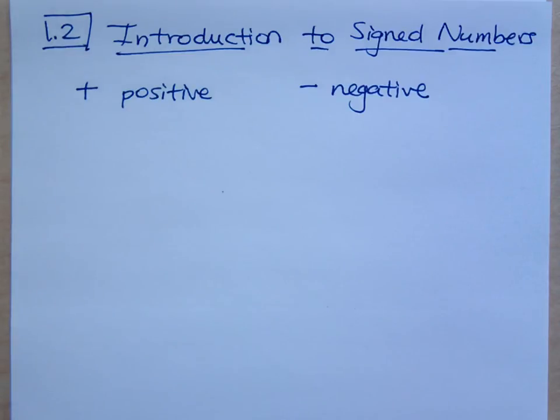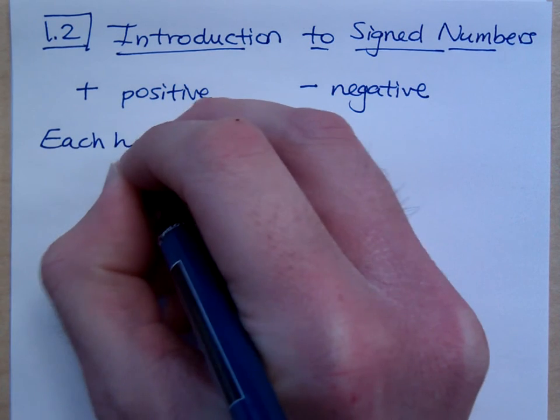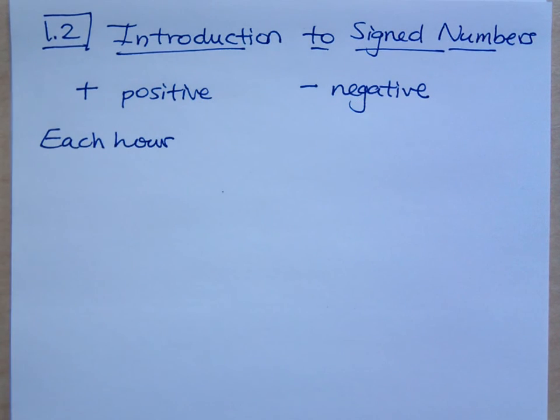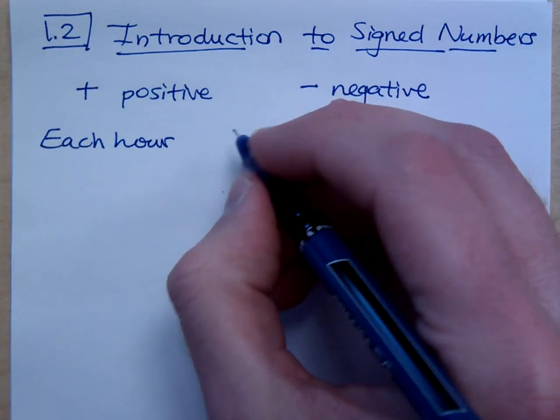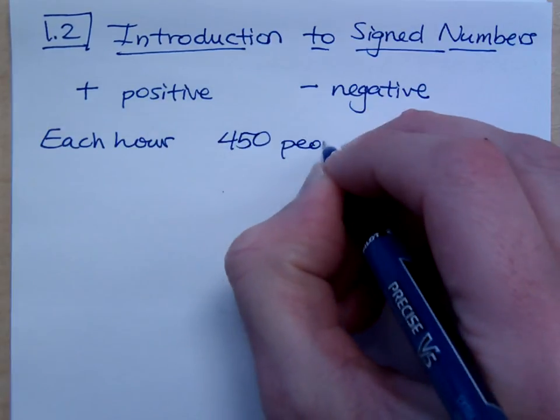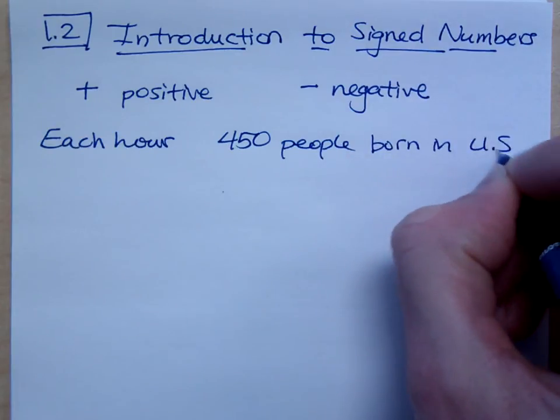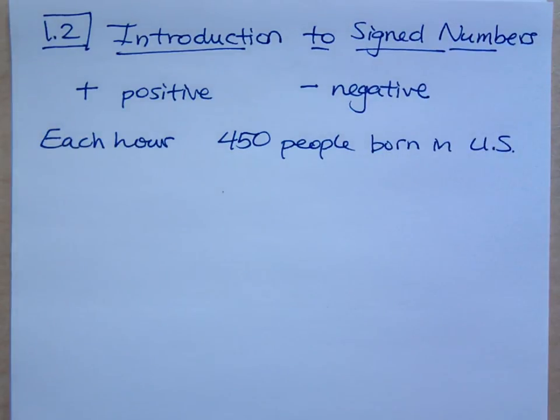We were talking about the birth and death rates a little while ago, right? So here's what we have. Each hour, and this is just approximately, we have 450 people born in the U.S.